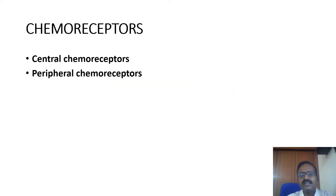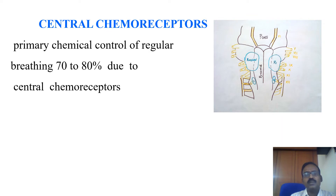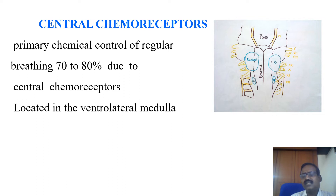Respiration is regulated by chemical receptors or chemoreceptors. Two types of receptors play an important role in chemical regulation: one is the central chemoreceptors and another is the peripheral chemoreceptors. The central chemoreceptors are the primary chemical control of regular breathing — 70 to 80 percent — and are located in the ventrolateral medulla, different from the dorsal and ventral respiratory group of neurons.